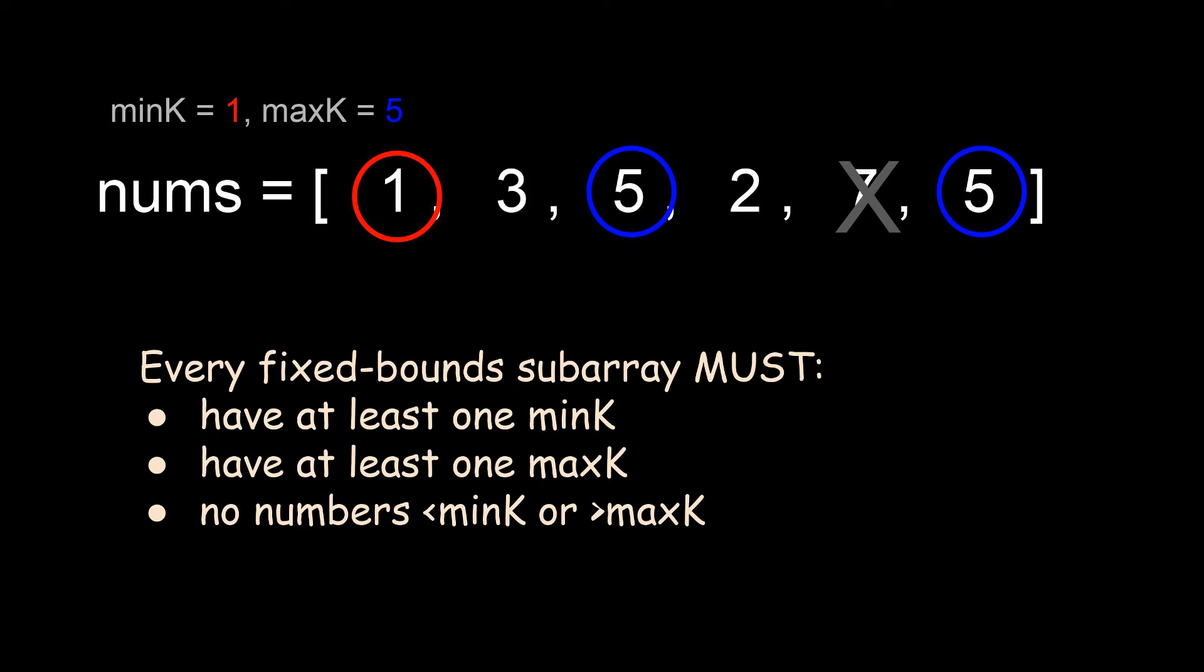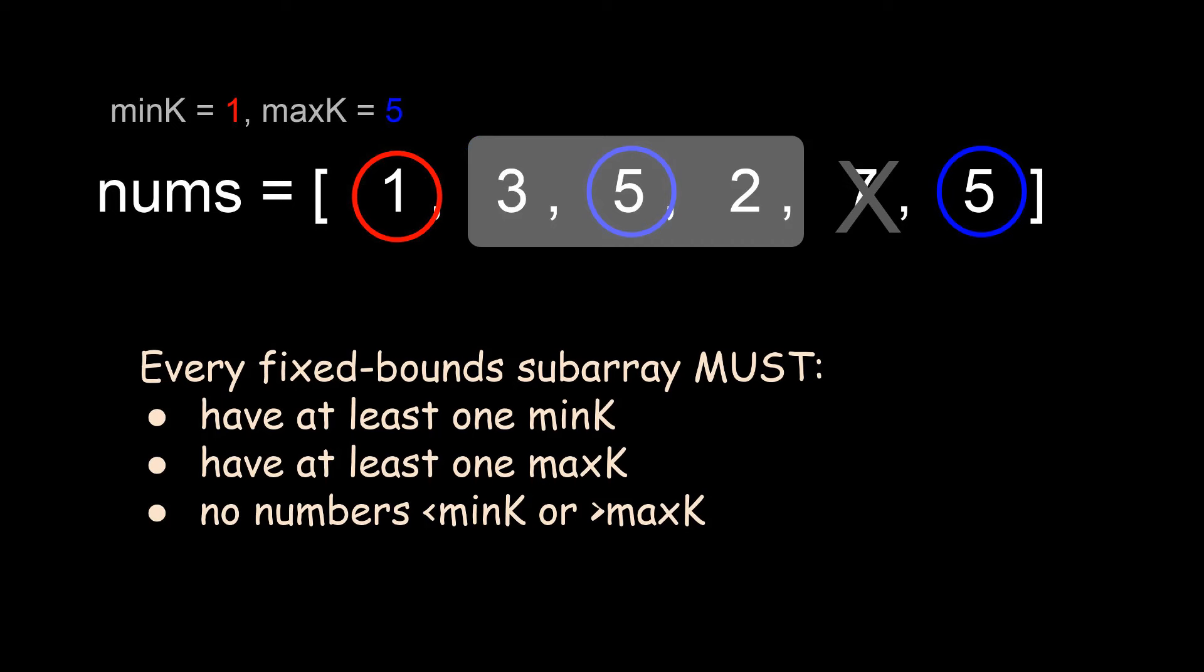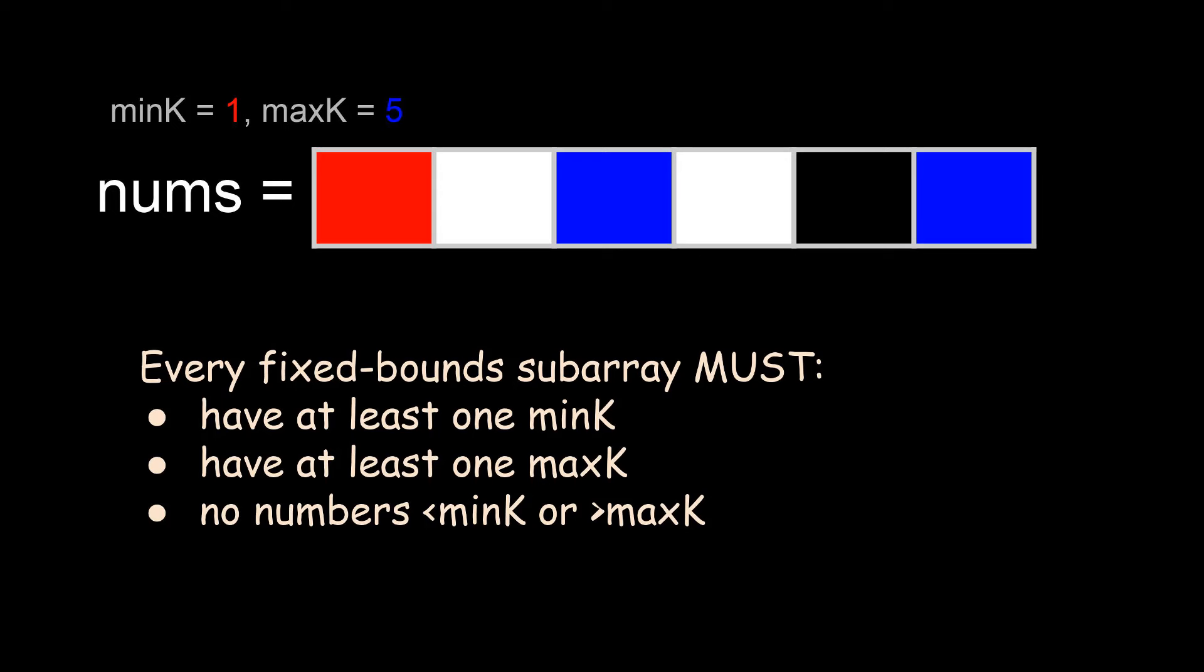Essentially, we can divide the numbers in nums into 4 categories. There are the min k's, there are those that are equal to max k, there are those that are smaller than min k or larger than max k. These are the bad numbers with the black cross. And then there's the numbers that are in between min k and max k. These are sort of like NPC numbers. You don't care too much about them. In fact, we can stop thinking of nums as an array of numbers, but as more a sequence of color blocks. The actual value of each number does not matter at all. All we want to know is its type. Is it a red min k? Is it a blue max k? Is it a black, those bad numbers we have to avoid? Or is it a white, just regular NPC number between min and max k?